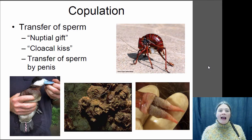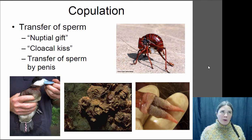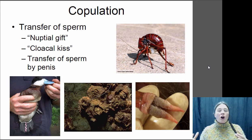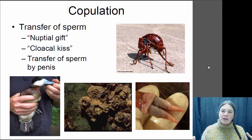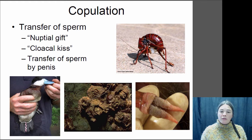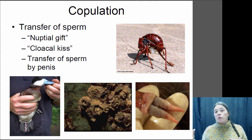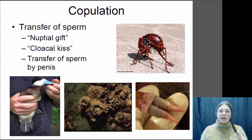So if you're going to have internal fertilization, you have to transfer the sperm somehow. I'm sure you know about how sperm transfer works in mammals, so I'm going to tell you some other interesting sperm transfer mechanisms for internal fertilization. Many insects have what's called a nuptial gift — this is a glob of sperm and carbohydrates and proteins developed by the male. It is inserted into the female's cloaca. The nuptial gift will feed the female at the same time as she is accepting the sperm to fertilize her eggs. The bigger the nuptial gift, the more energy the female has to produce eggs and the more offspring the male can have.